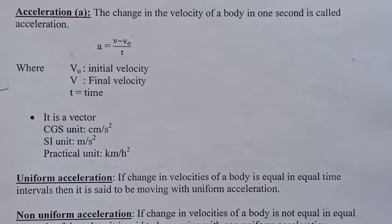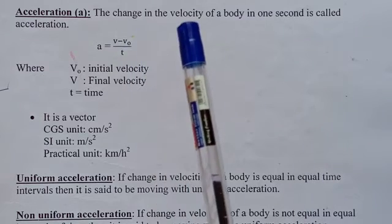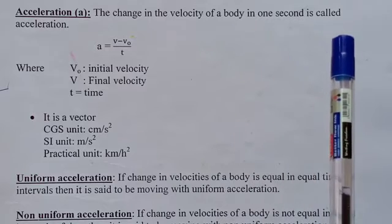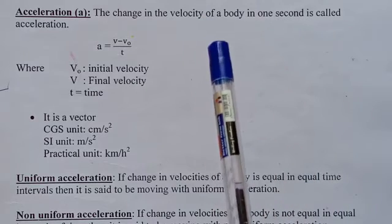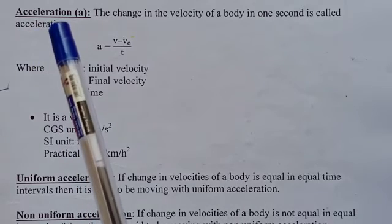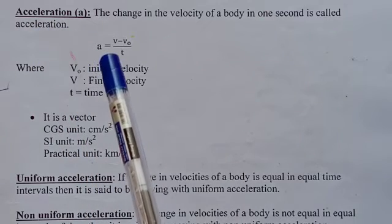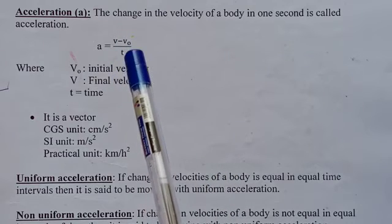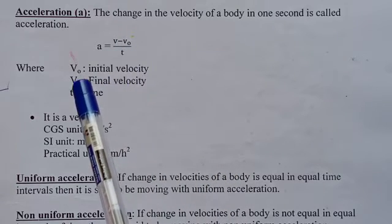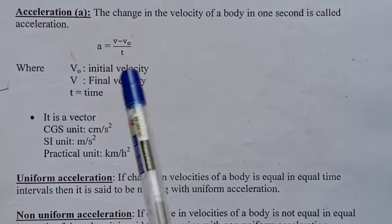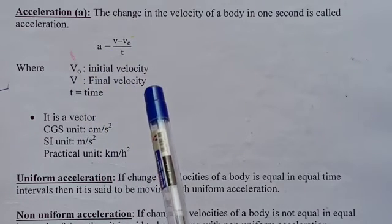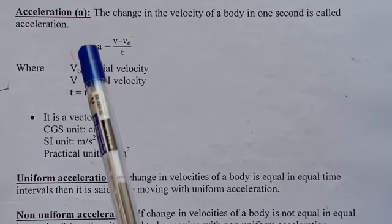Students, continuation to video 3 on acceleration. Acceleration is defined as the change in velocity of a body in one second — that is, the rate of change of velocity. The formula is: acceleration = (v minus v-naught) divided by t, where v-naught denotes initial velocity, v denotes final velocity, and t means time.